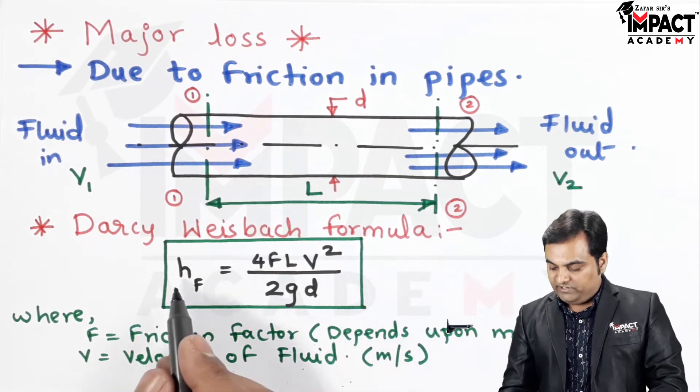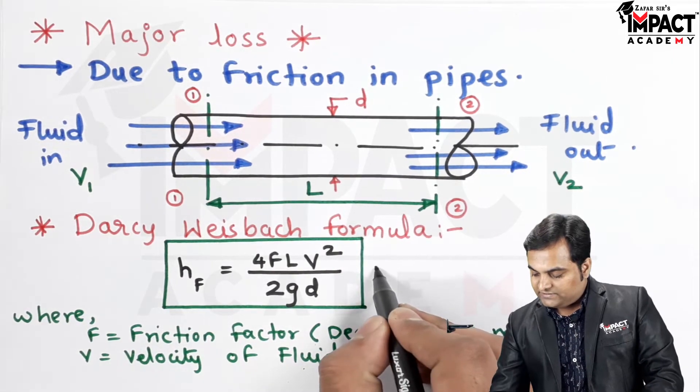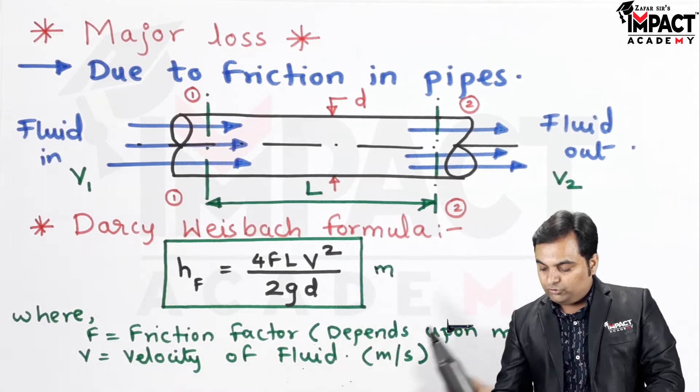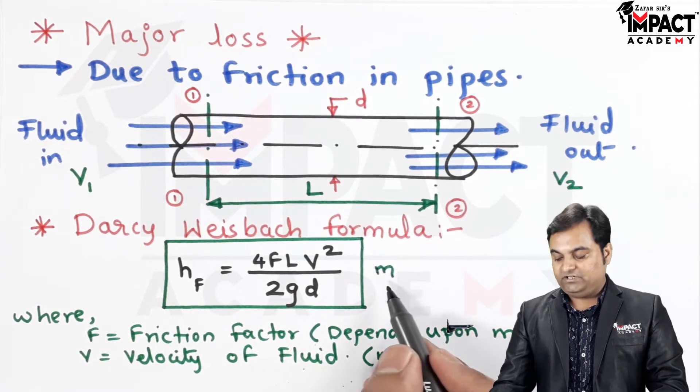By using the Darcy Weisbach formula, we can get HF also called as the head loss due to friction, and the unit is in terms of meter.